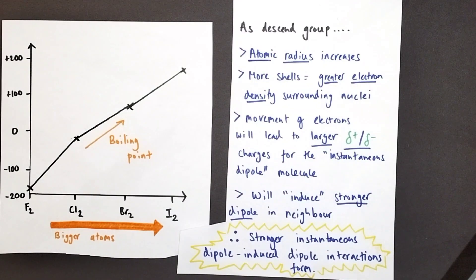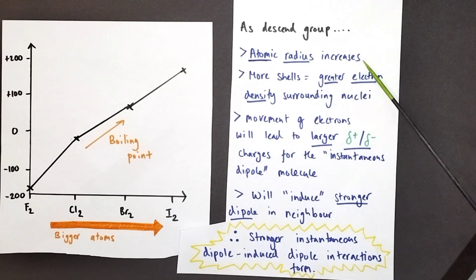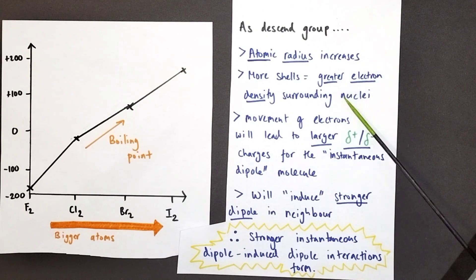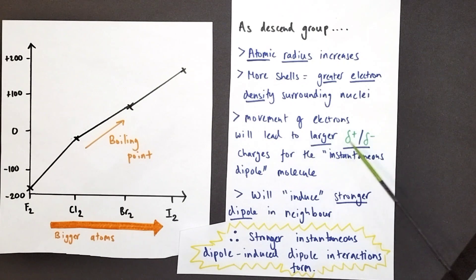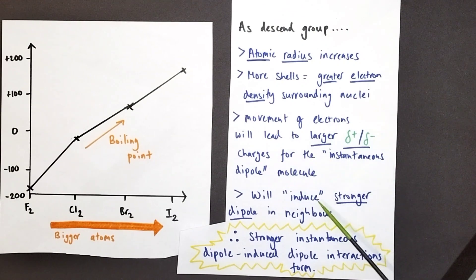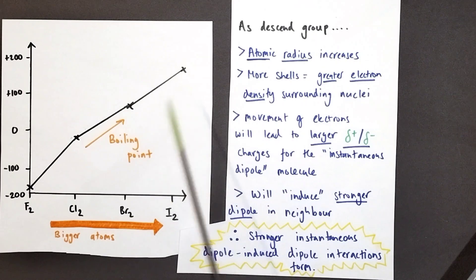As we go down the group, the atoms are getting bigger, meaning the atomic radius is increasing. There are more shells filled with electrons and therefore greater electron density surrounding the nuclei of these molecules. The movement of these electrons around will lead to larger delta negative and delta positive charges in our instantaneous dipoles as they form. These will induce stronger dipoles in neighbouring molecules, leading to stronger instantaneous dipole-induced dipole interactions and hence higher boiling points.